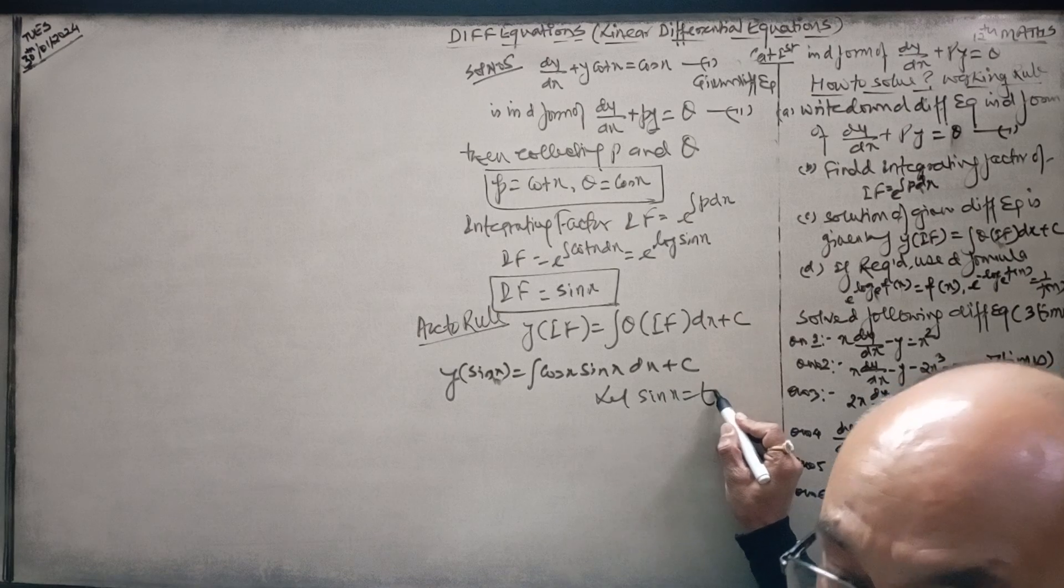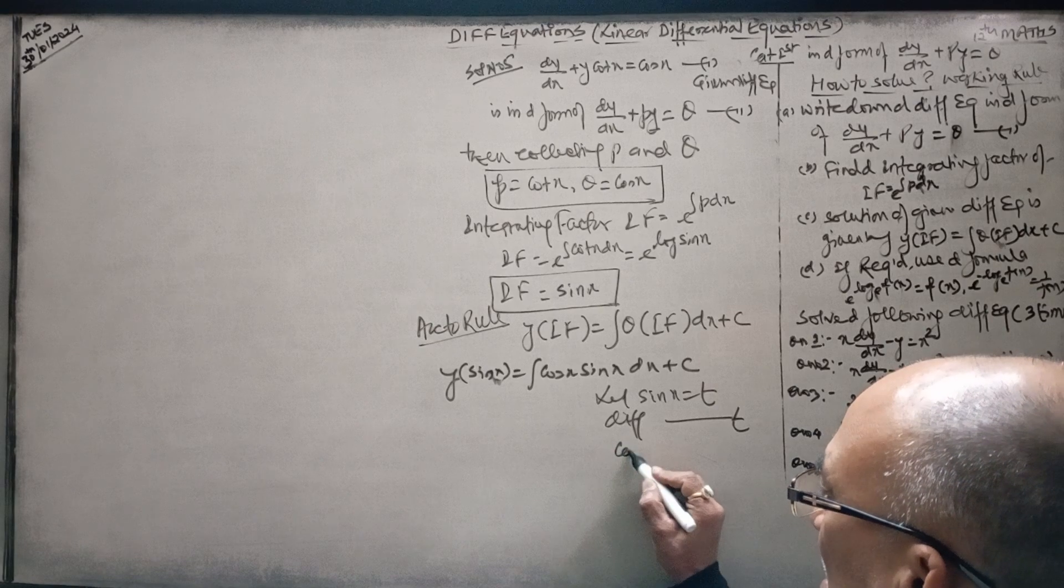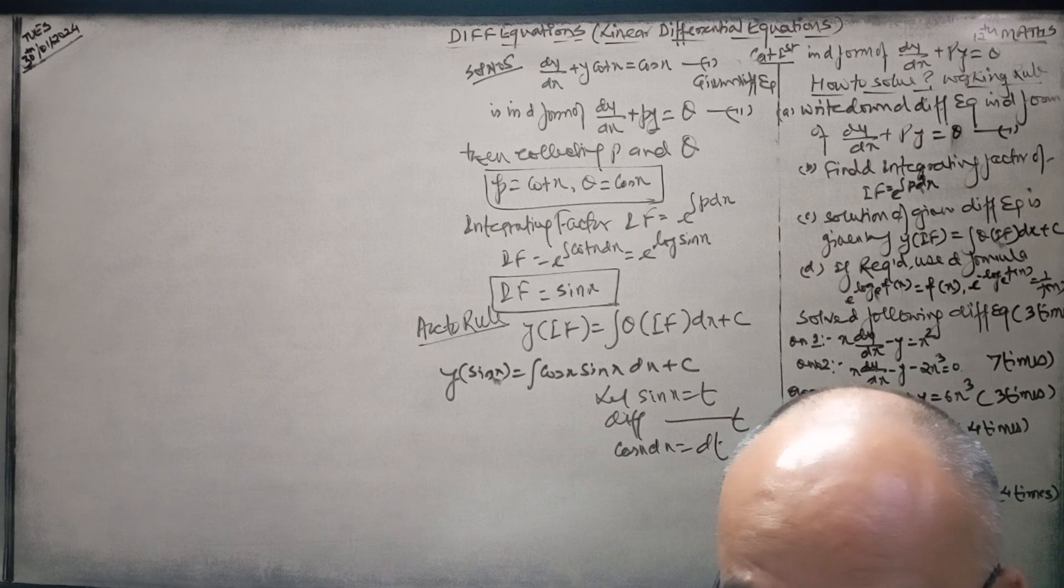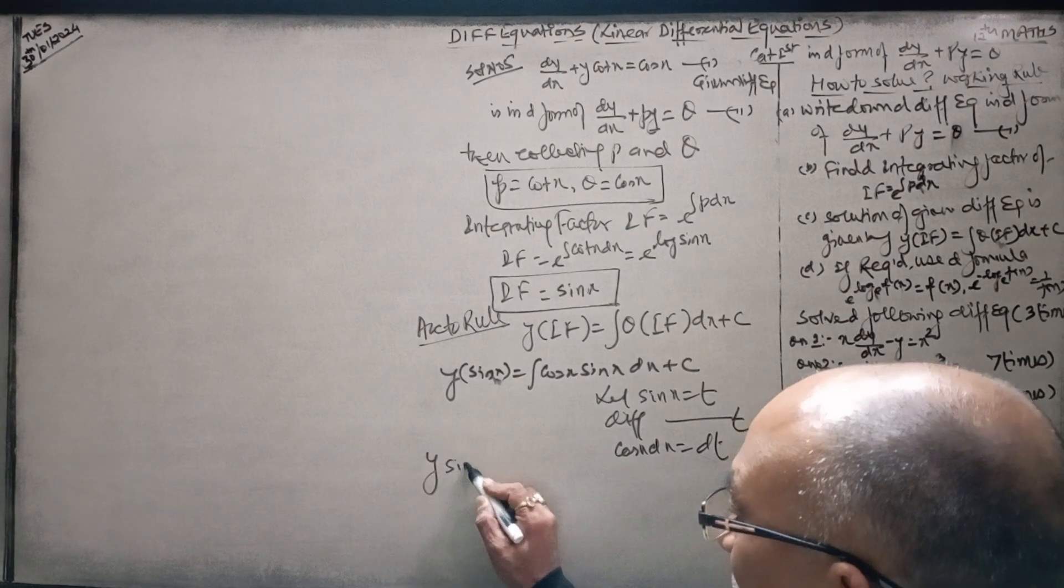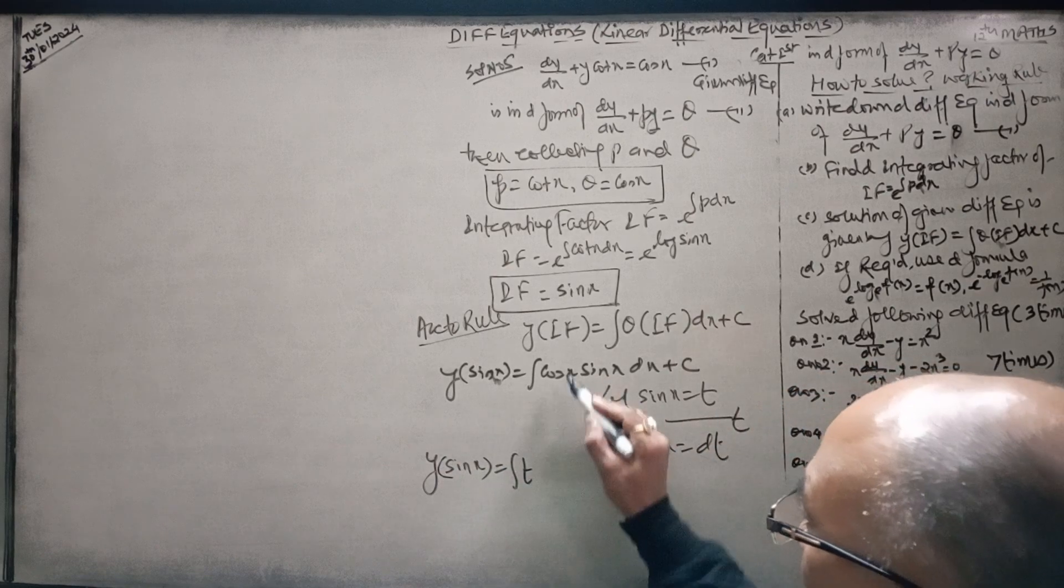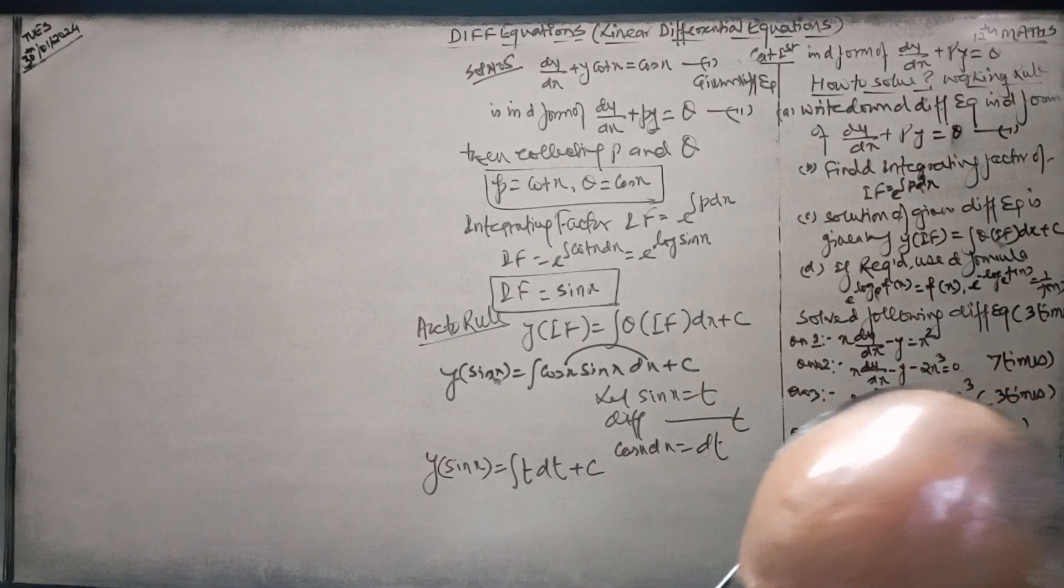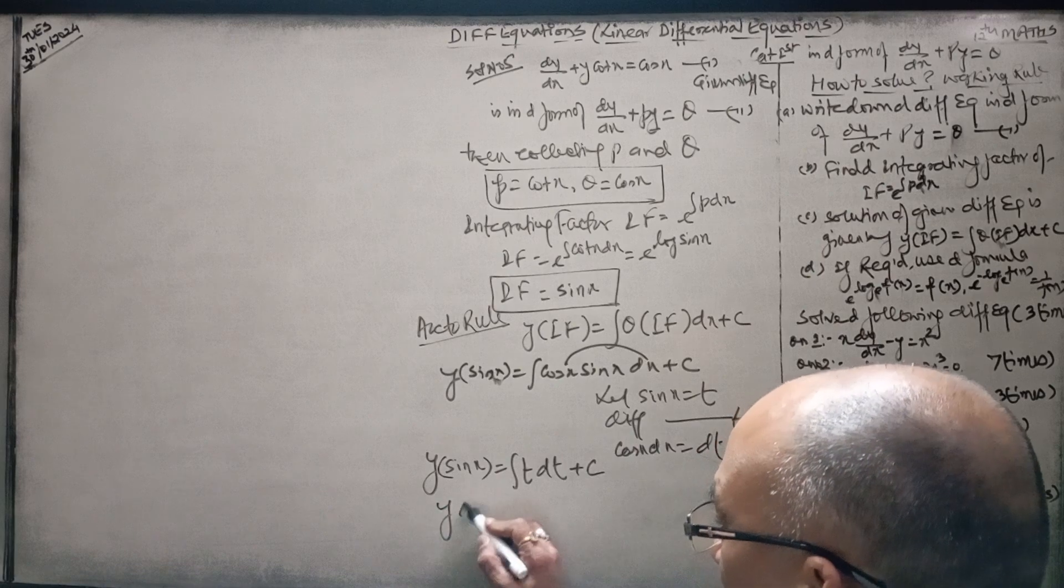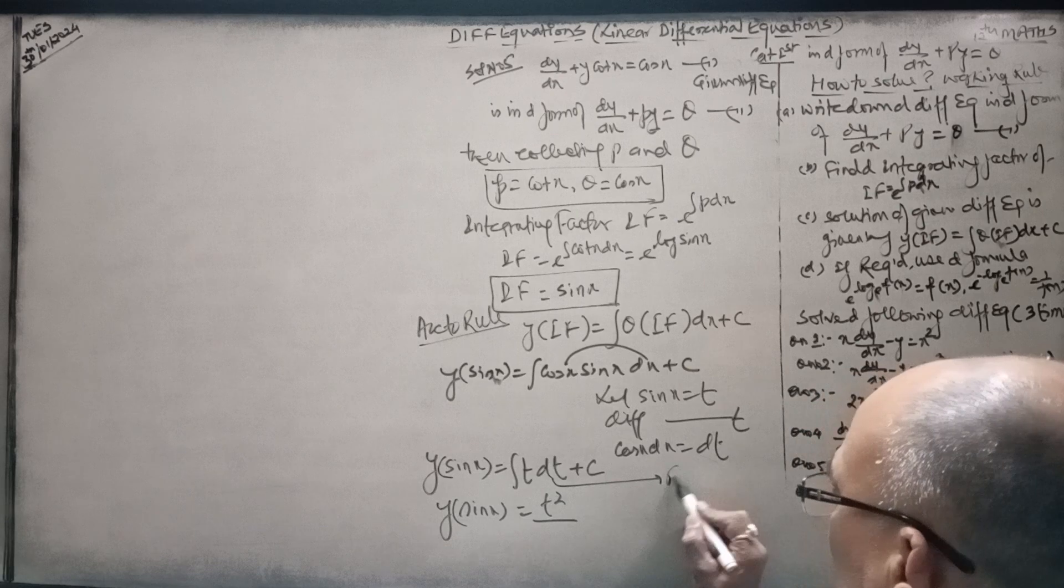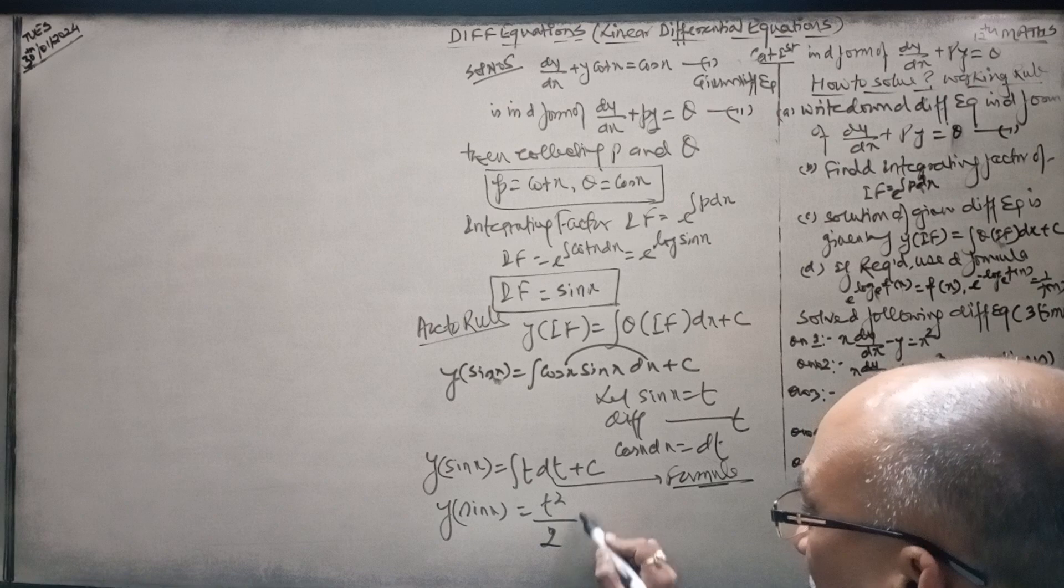Now you can do substitution: sin x equal to t. Differentiating both sides with respect to x, cos x dx equal to dt. So now y times sin x equal to integral of t dt plus c, which gives y sin x equal to t squared over 2 plus c.